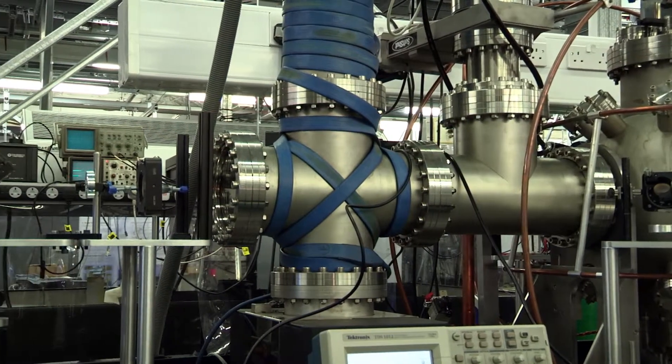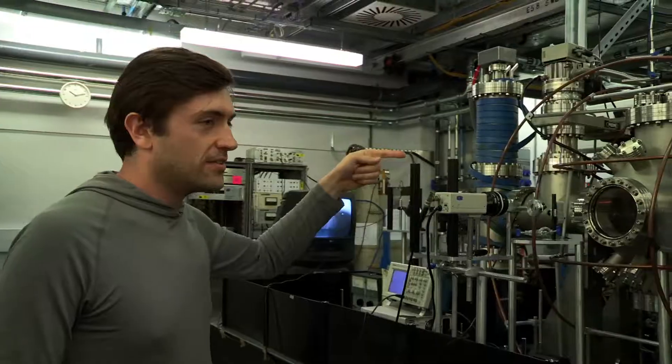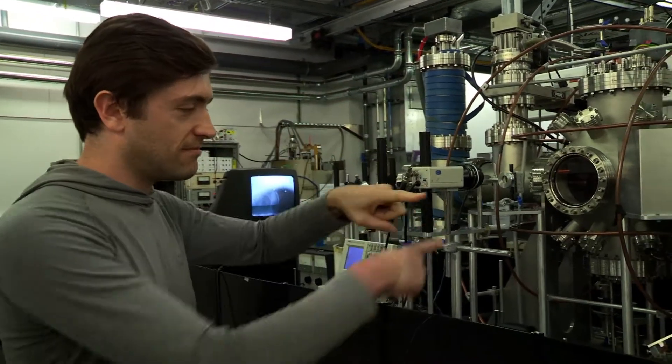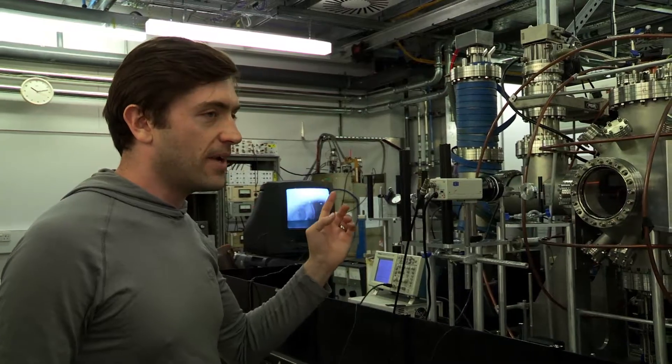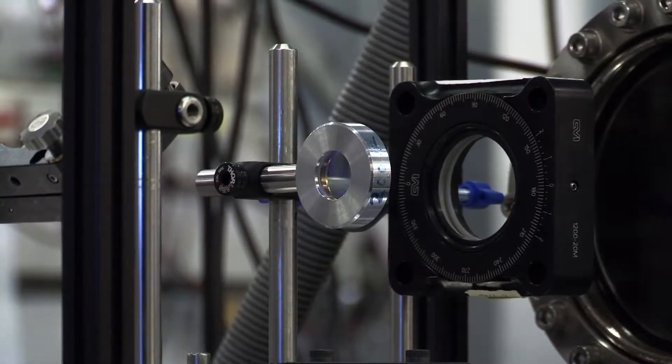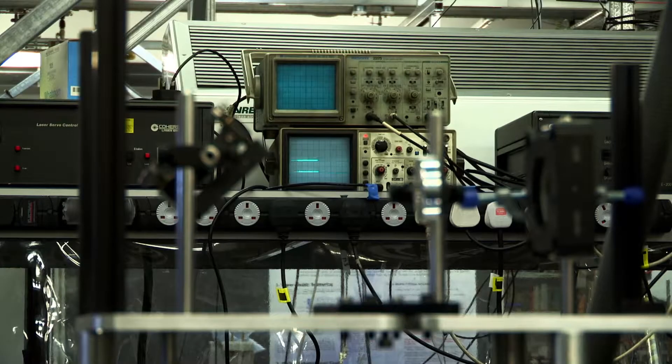So inside this chamber this is a magneto-optical trap. This uses six laser beams like in a cross pattern and together with a magnetic field we do this to slow the atoms down and cool them right down.